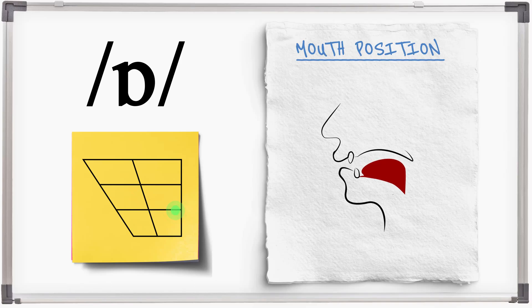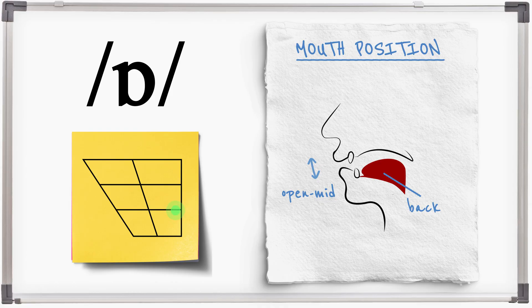O is a short sound made with the tongue pulled back, the jaw open mid, and the lips rounded. O.